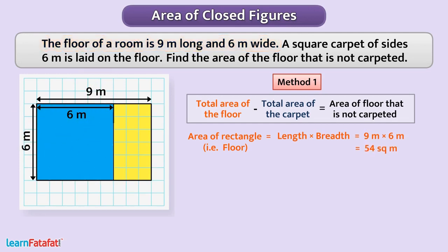The carpet have square shape. We know that, the area of square is side multiplied by side. That is equal to 6 meter multiplied by 6 meter is equal to 36 square meter.